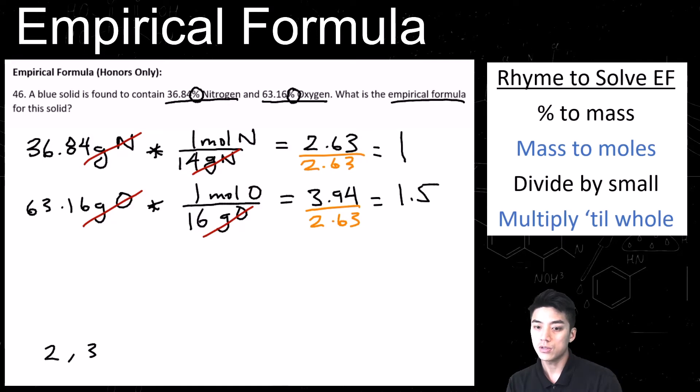So we will start at 2, and if 2 doesn't give us a set of whole numbers, we're going to work our way up to 3, 4, 5, 6, and so on. But it looks to me like 2 will work. So 2 will yield 2 nitrogens and 3 oxygens, because 1.5 times 2 gets you 3. So the empirical formula is N2O3.